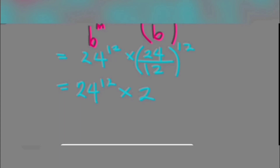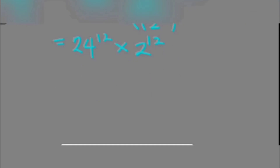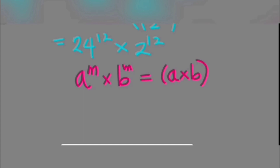At this point we apply the power of a product law again: if a to the exponent m multiplied by b to the exponent m, since they share the same exponent, they can be written as (a times b) to the exponent m. Applying this to the expression, it becomes (24 multiplied by 2) to the exponent of 12. Since 24 multiplied by 2 is 48, the final answer becomes 48 to the exponent of 12.